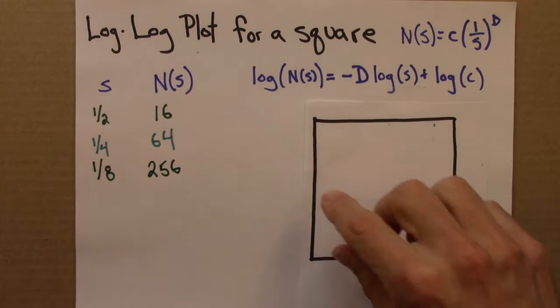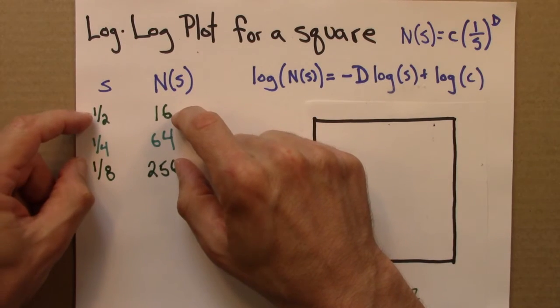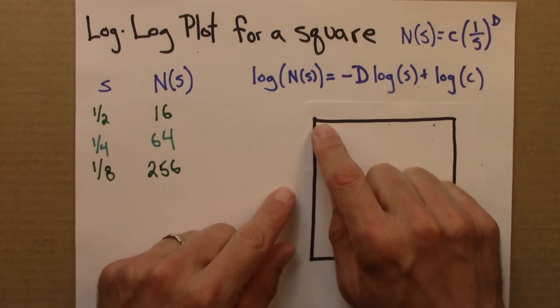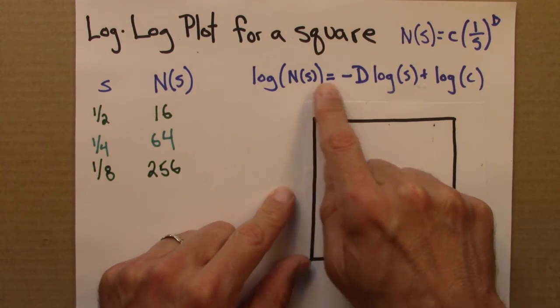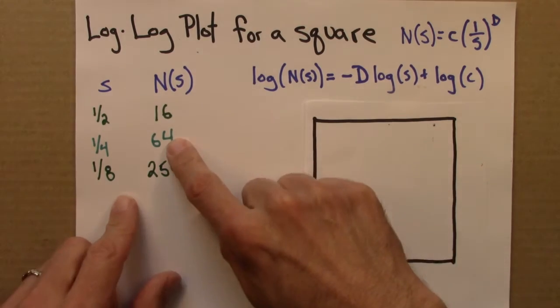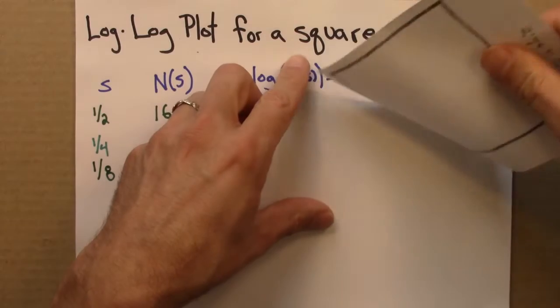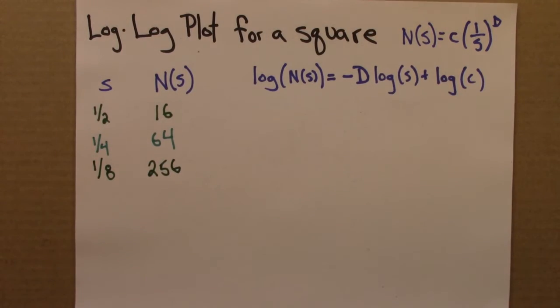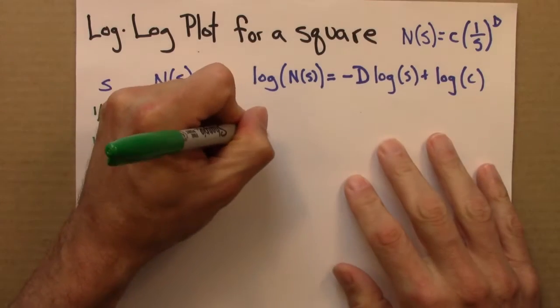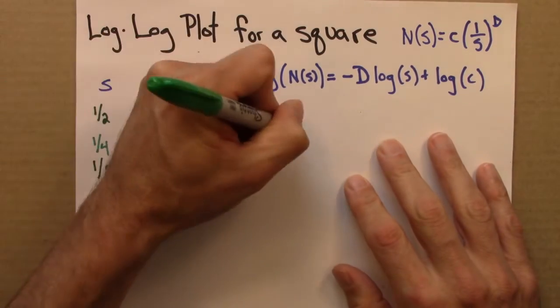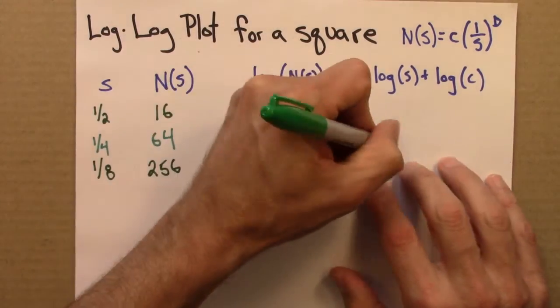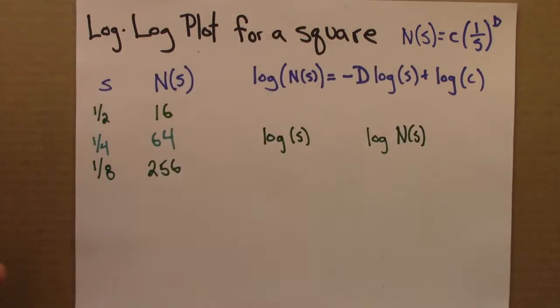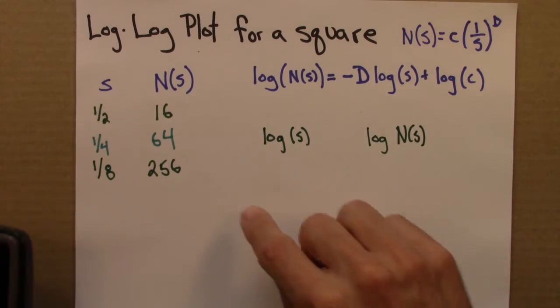So what we want to do is use these numbers in this equation. So what I'm going to do is I'm going to take the logarithm of n of s and the logarithm of s and make a new table of numbers.